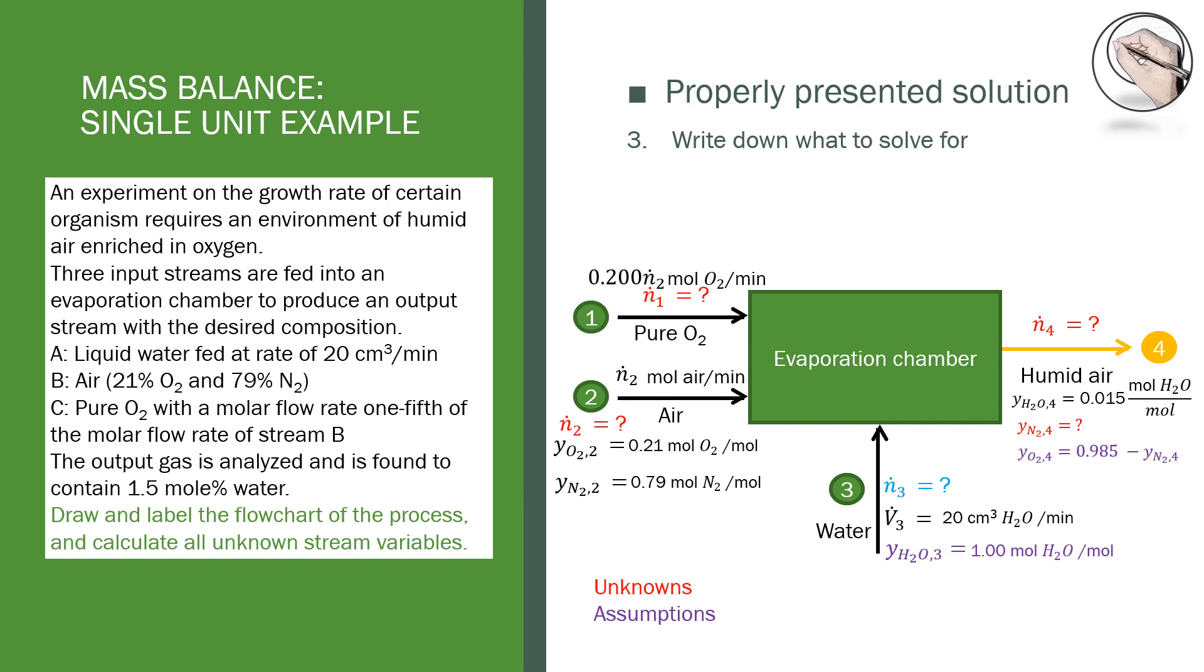Because we have been given a volumetric flow rate and we want to work in terms of moles, we do not really classify the molar flow rate of stream 3 as an unknown variable, but it does require some sort of unit conversion from volume to moles first before we can use it.